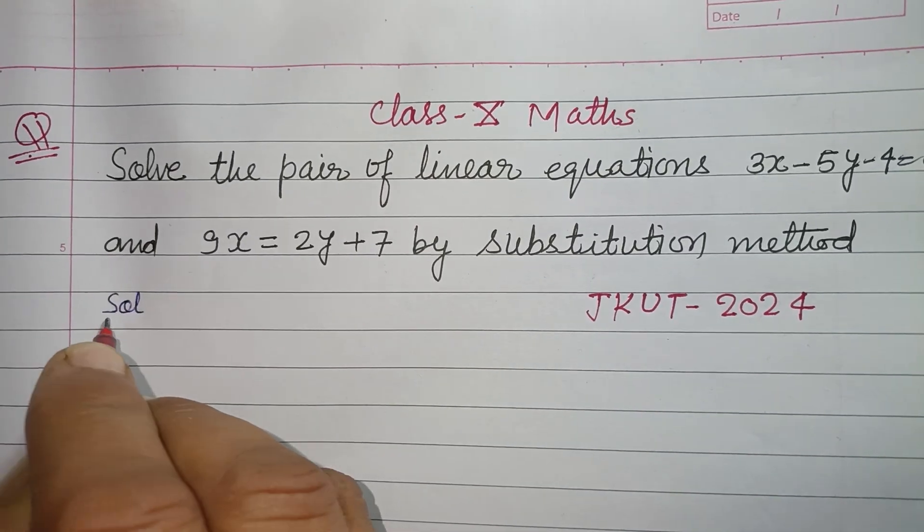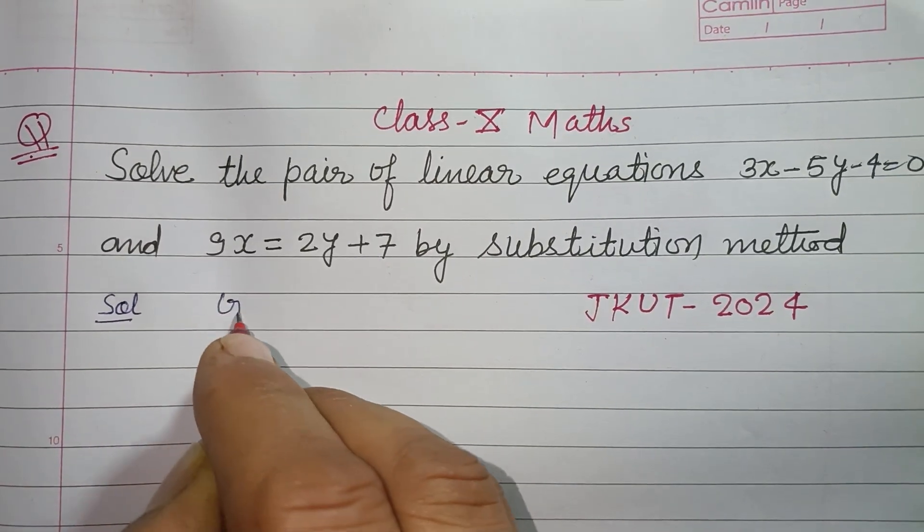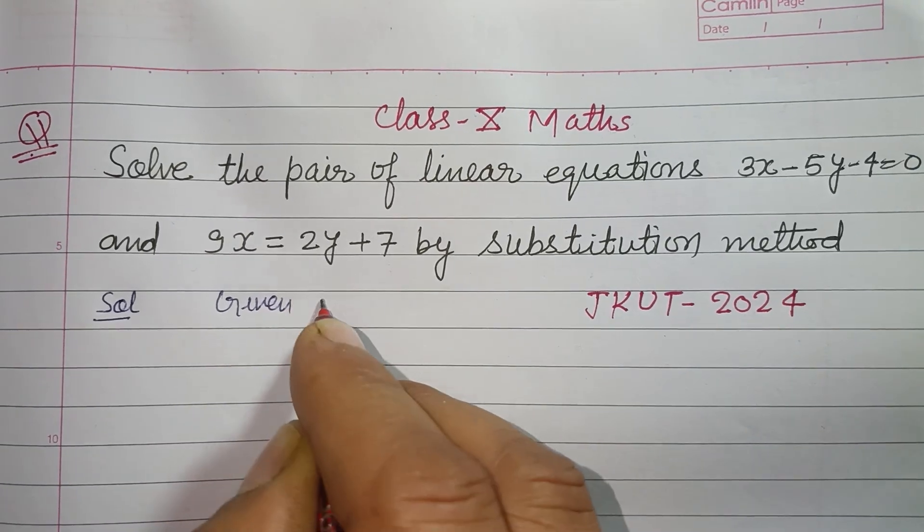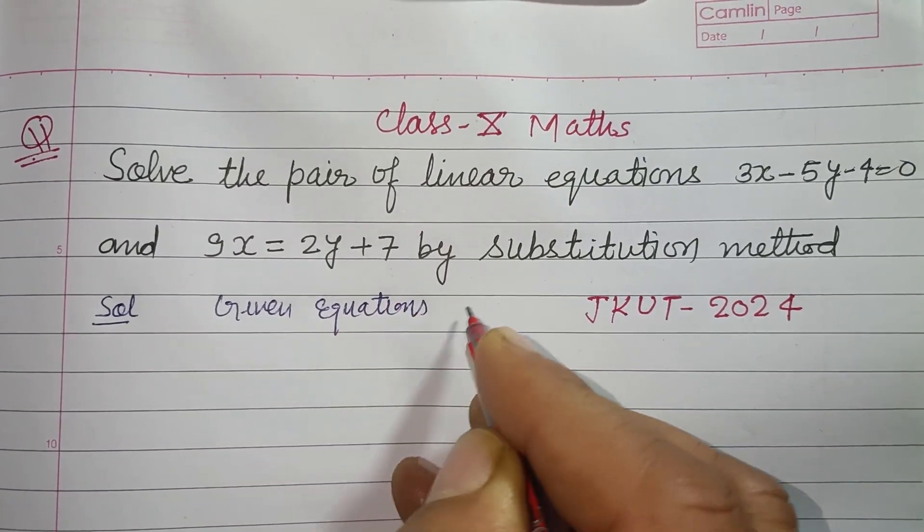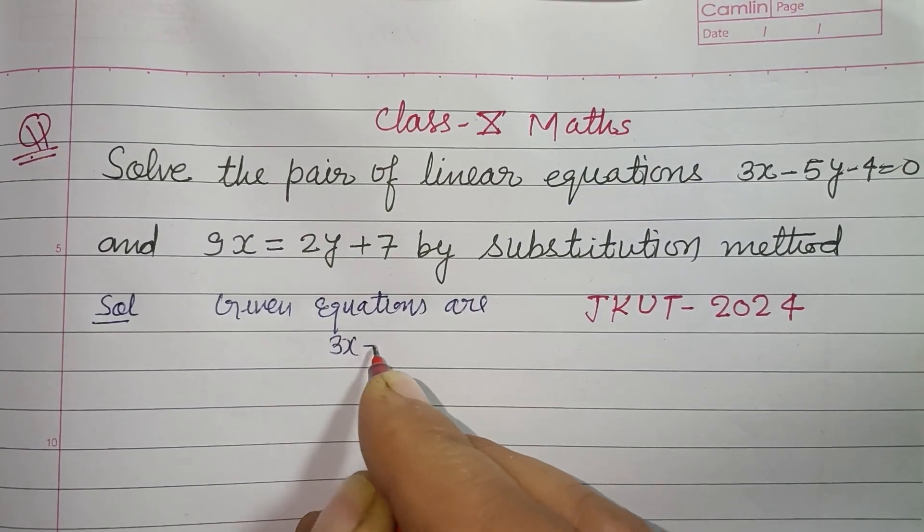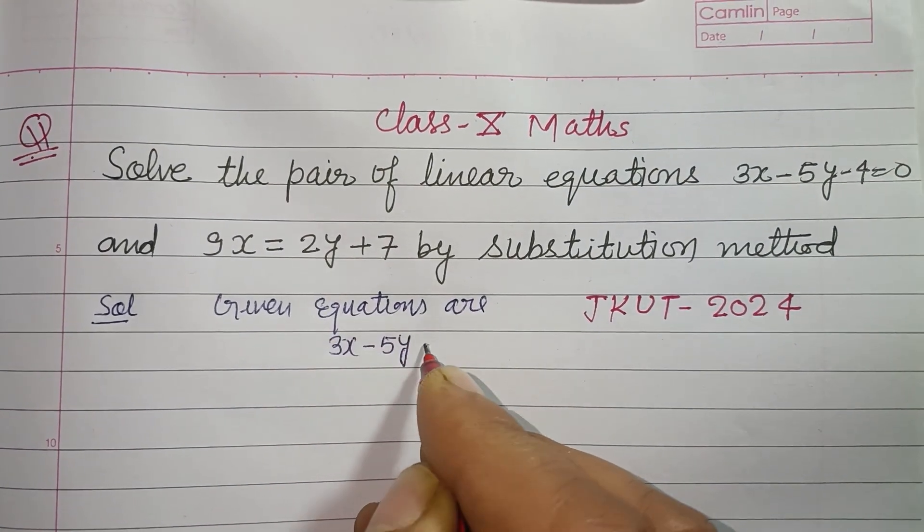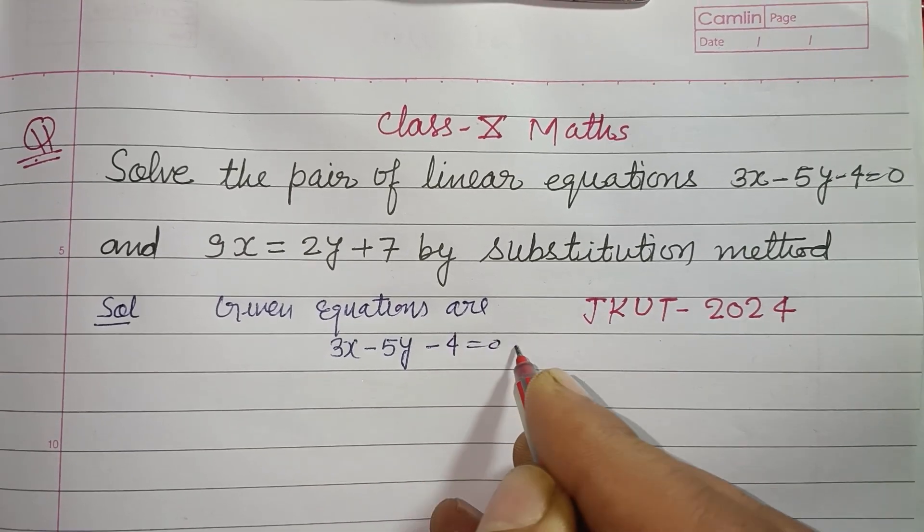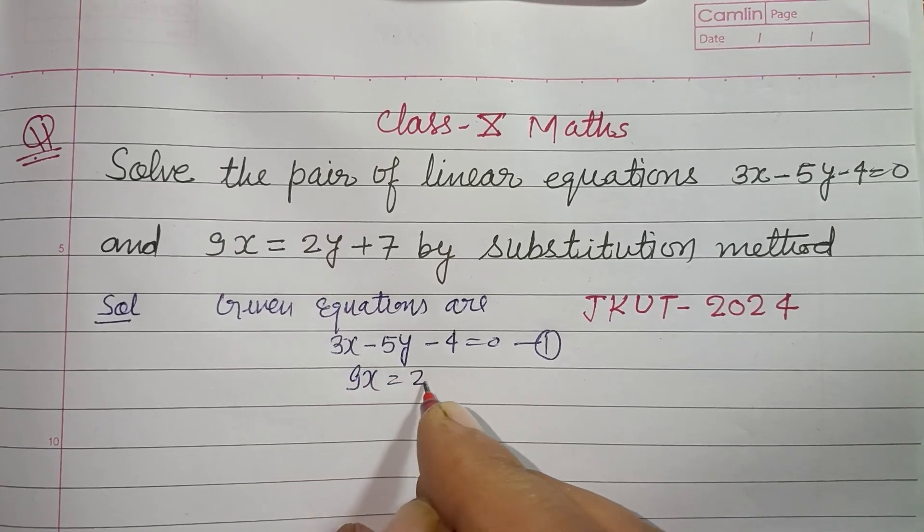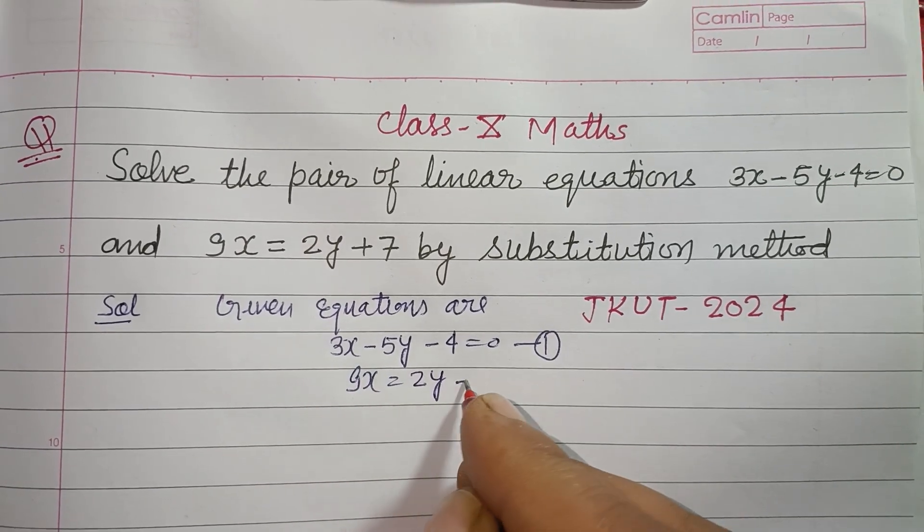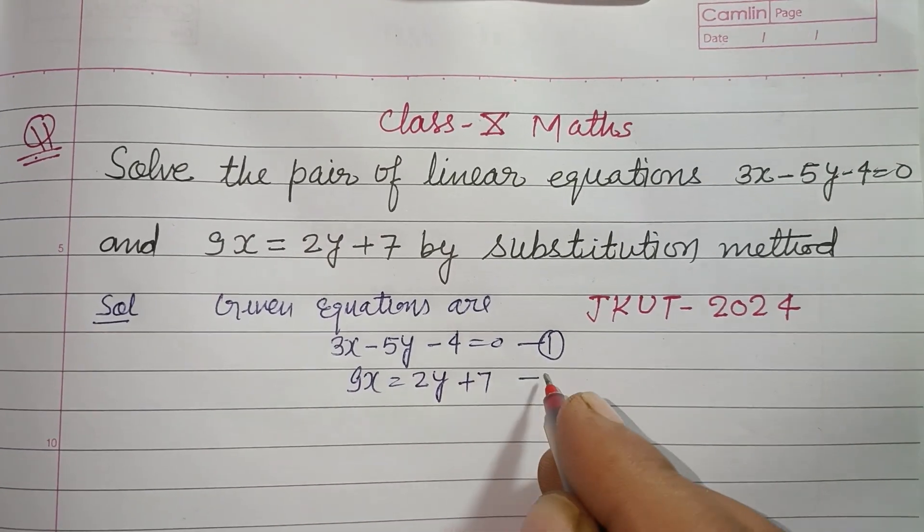So students, given equations are 3x - 5y - 4 = 0. This is our first equation and 9x = 2y + 7. This is our second.